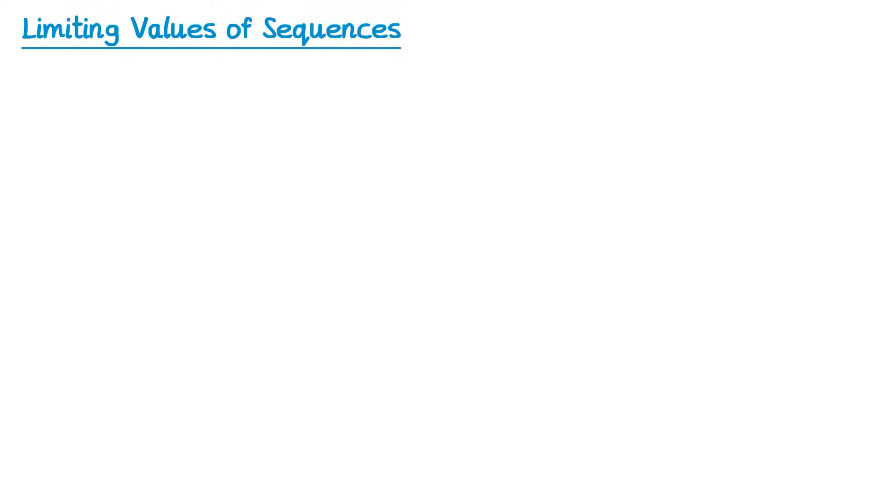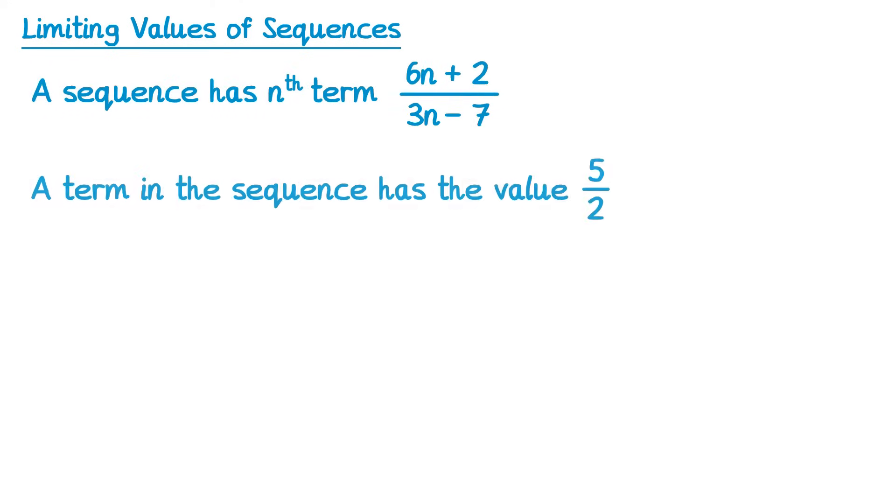Now let's look at some typical exam questions. Finding the limit of a sequence tends to be the second part of an exam question. Let's have a look at some so we can see the first part as well. So we have a sequence with this nth term, and part a says a sequence has the nth term with value 5 over 2, work out the value of n. So we want this nth term to be equal to 5 over 2. So we just write the nth term equals 5 over 2, and we just have an equation to solve to find the value of n.